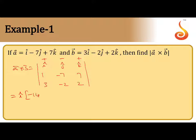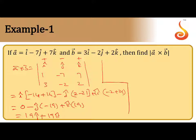i cap into minus 14 plus 14, minus j cap into 2 minus 21, plus k cap into minus 2 plus 21. So this will give first term 0, second term minus 19, third term plus 19. This minus and minus gives plus 19j cap plus 19k cap. This is the value of a cross b.